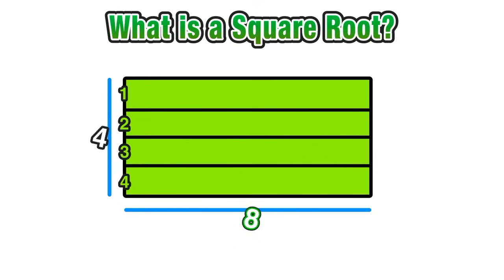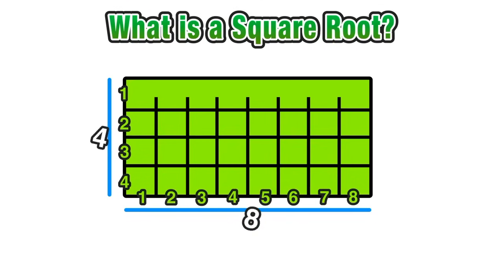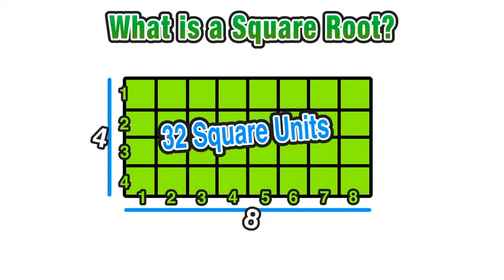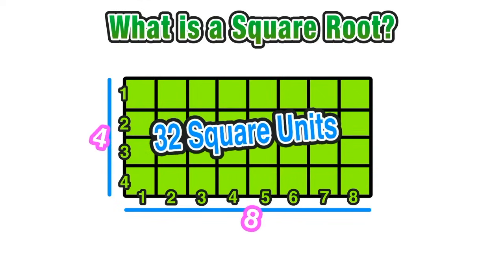For the length we have eight equal size units which split it up along the length. Now we have these squares that make up the inside, the area of that figure: length times width. In this case, four times eight, which we know is 32. So the area of this rectangle is 32 square units.